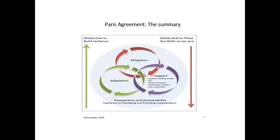The Paris Agreement has these key provisions: it's a global goal to build climate resilience, and also a global goal to phase out greenhouse gas emissions to net zero. We see the interaction between mitigation — reducing greenhouse gases — adaptation, learning to live with the changing climate, and support or means of implementation including capacity building, the global climate fund, finance strategy, technology transfer and cooperation. Cutting across all these is the transparency and accountability mechanism for facilitating and promoting implementation.